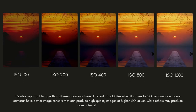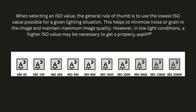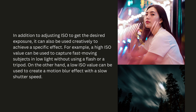Different cameras have different ISO performance capabilities — some have better image sensors that can produce high-quality images at higher ISO values, while others may produce more noise. The general rule of thumb is to use the lowest ISO value possible for a given lighting situation, to minimize noise and maintain maximum image quality. However, in low-light conditions, a higher ISO may be necessary for a properly exposed image. ISO can also be used creatively: a high ISO can capture fast-moving subjects in low light without a flash or tripod, while a low ISO can be used to create a motion blur effect with a slow shutter speed.